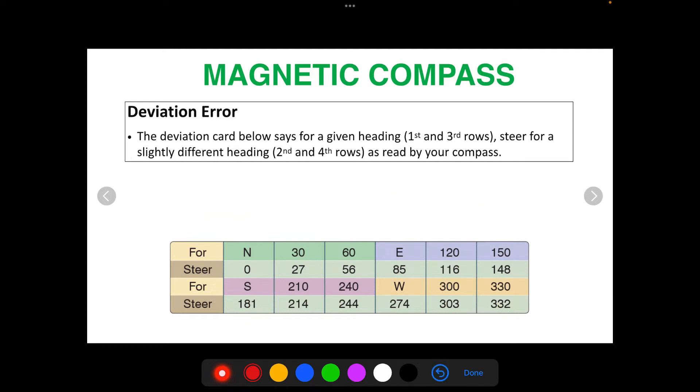It says that for a given heading, the first and third rows, those four rows, so for those headings steer for a slightly different heading. These ones labeled steer, the second and fourth rows, as read by your compass.